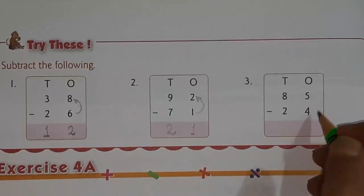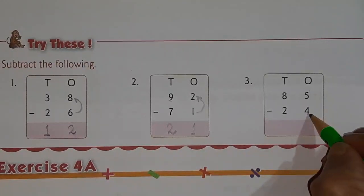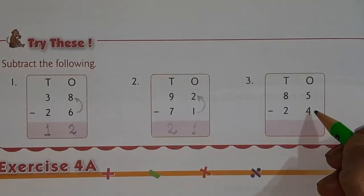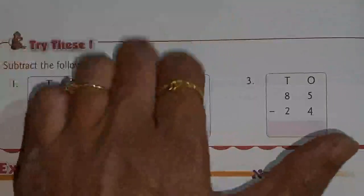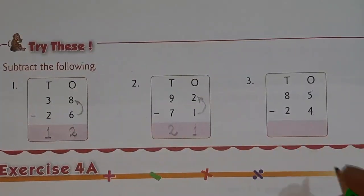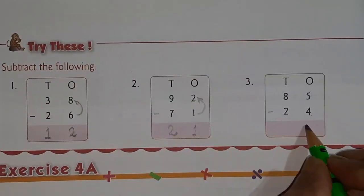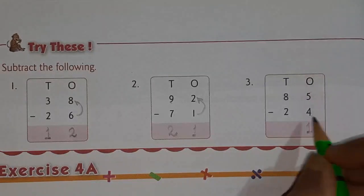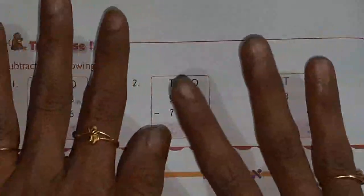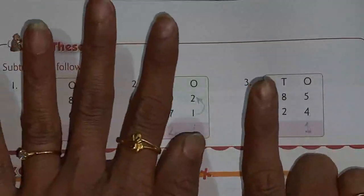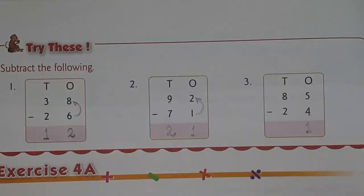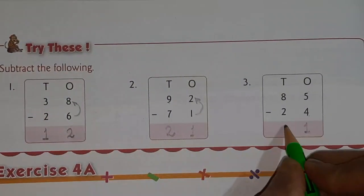Next one. From the ones column, 5 minus 4: open 5 fingers, cut 4, there remains 1, so write it in the ones column. Then for tens: open 8 fingers, cut 2, there remains 6, so we are writing 6 here.